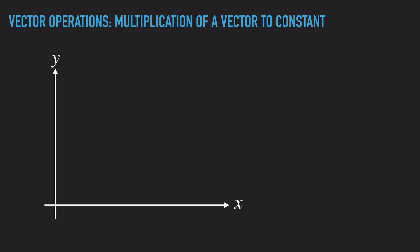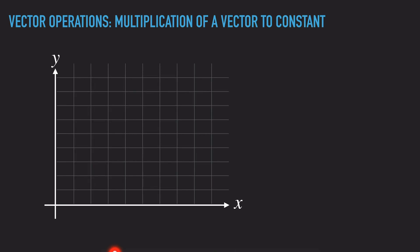Let's say I have a rectangular coordinate system, and I draw a vector with components 3 and 3. If I multiply this vector by the constant 2, it is going to be a vector with components 6 and 6 — the same direction, but twice as long as the original vector. And if I multiply the blue vector by 2/3, the resulting vector is going to be shorter, but the direction remains the same. So multiplication of a vector by a constant simply changes the length, but does not change the direction.